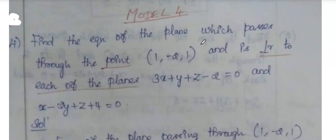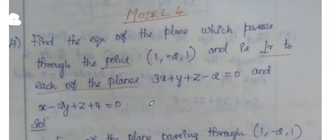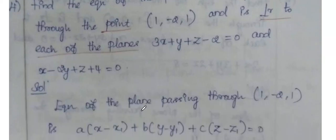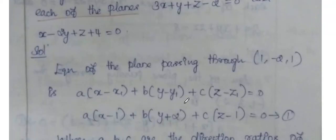Find the equation of the plane which passes through a given point and is perpendicular to each of two given planes. The general equation is: a(x - x1) + b(y - y1) + c(z - z1) = 0. Substituting the point, x1, y1, z1 are given values.